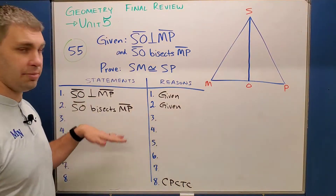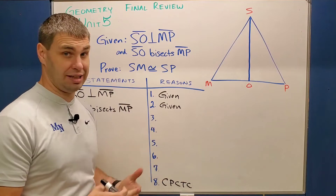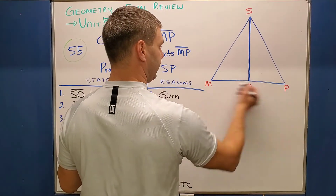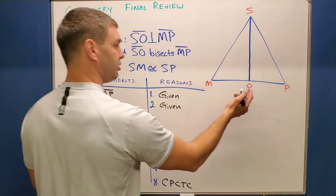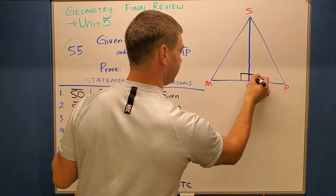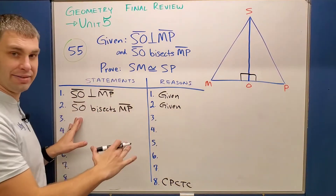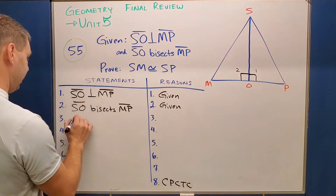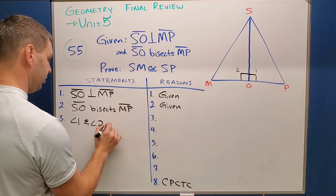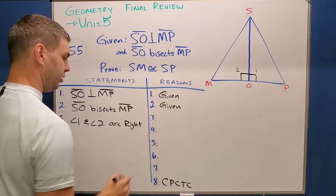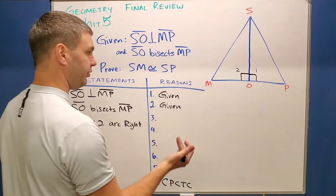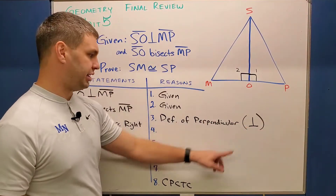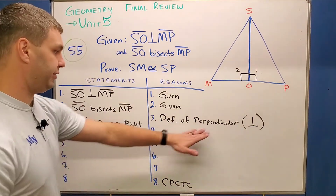Now that I've got my two givens written into the proof, I need to mark up the picture with what those givens are telling me. This first one says SO is perpendicular to MP. SO is this vertical line and MP is this horizontal line. If they're perpendicular, that implies these are right angles. I'll draw that in, but I also have to state a line about that — that they are right angles. I'll call this angle one and angle two. So I'm going to say angle one and angle two are right angles. That's for line three. The reason is the definition of perpendicular — and in parentheses I put the perpendicular symbol too, in case your teacher lets you write that instead.